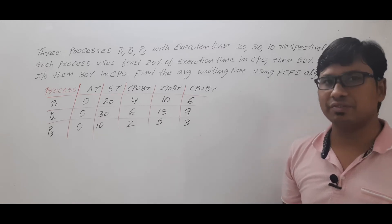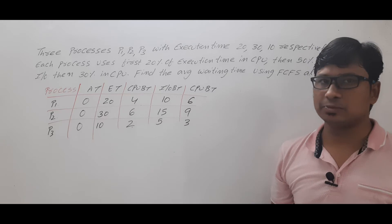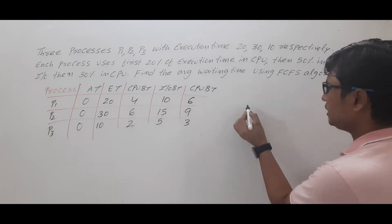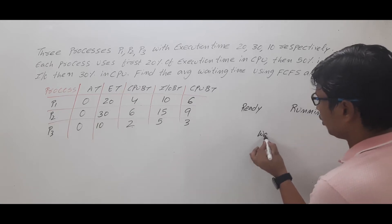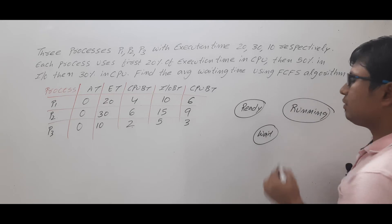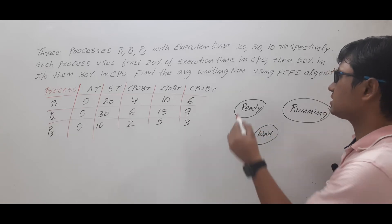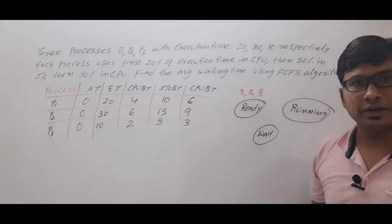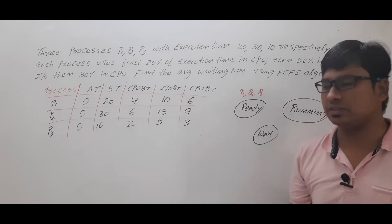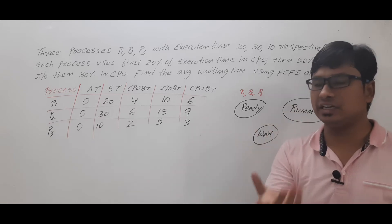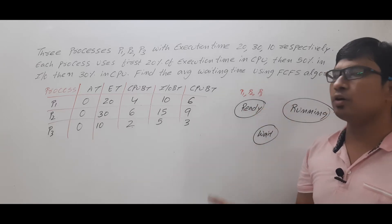We already discussed the process state diagram — we have states such as new, ready, running, terminated, wait, suspended wait, and suspended ready. To explain this concept, we take the ready state, running state, and wait or blocked state. Whenever a process is ready to execute, it comes to the ready state. If you have multiple processes such as P1, P2, P3, which process gets scheduled to the running state — since only one process can be in the running state at a time — will depend on the scheduling algorithm.